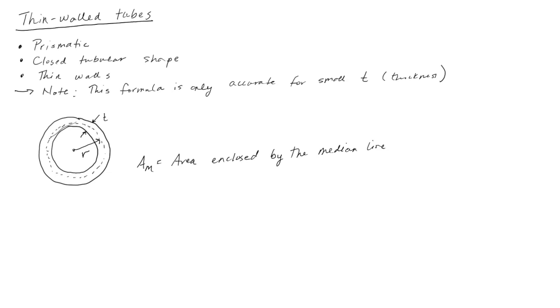That's the geometry. We can start with our torsion formula that we derived last time and make some simplifications and assumptions. The shear stress tau is now going to be equal to T over 2 times the thickness times the area enclosed by the median line. You can reference the book if you'd like to know more about where that comes from.